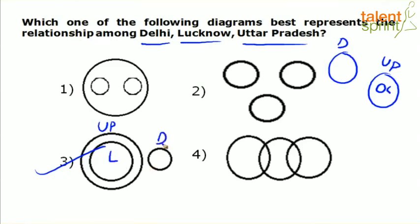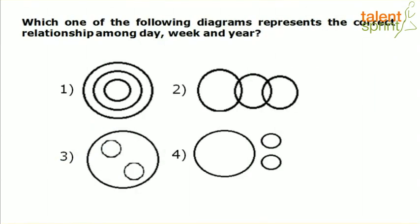Since Lucknow is part of Uttar Pradesh, it should come inside the Uttar Pradesh circle. So the correct diagram is option 3 again — the exterior circle is Uttar Pradesh, inside it is Lucknow, and the separate circle is Delhi. Had there been a city neither part of Delhi nor Uttar Pradesh, there would be three disjoint circles. But since Lucknow is inside Uttar Pradesh, option 3 is correct.